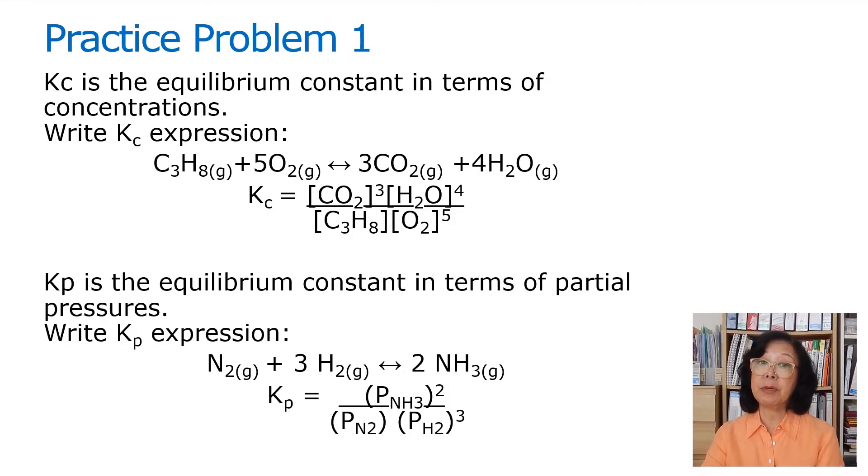One thing I'd like to point out is that when we write concentration, we use brackets to represent concentration of. And when we talk about partial pressure, we use parentheses. Please note the differences.